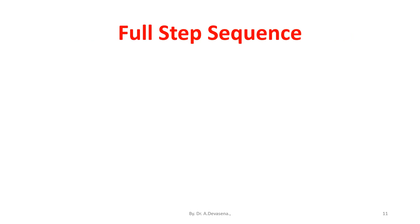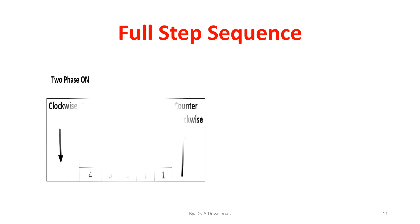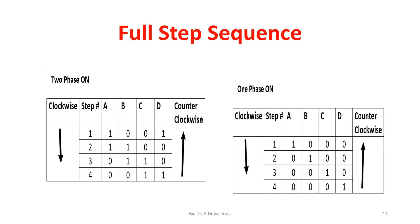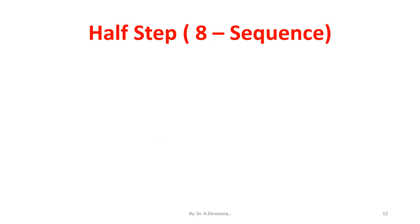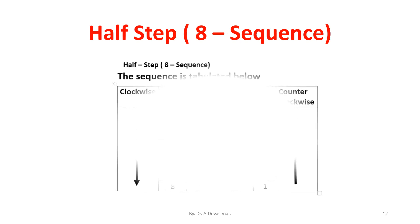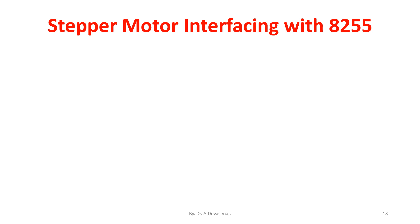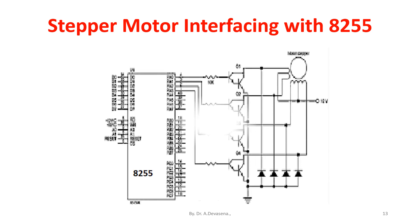Both are tabulated below. Full step sequence is represented here. In this diagram, two phase on values have been represented. Here, one phase on sequence is represented. Half step — that is the eight-sequence value — is represented in this table column. So far we have discussed about the construction of the stepper motor. Let us see the interfacing of stepper motor with 8255 to 8085.